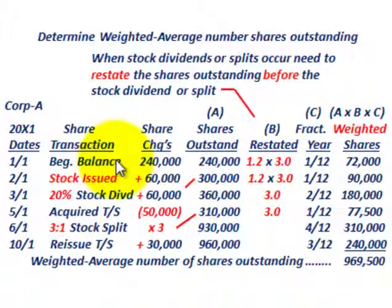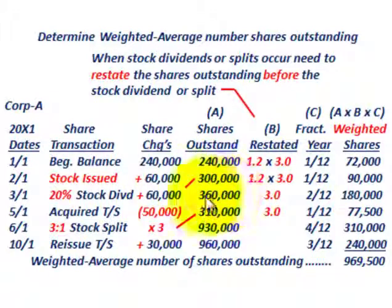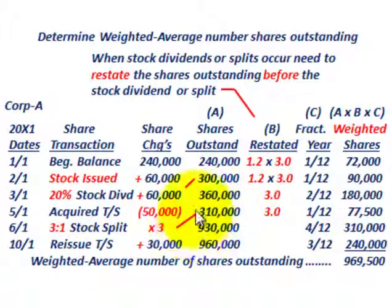Starting with a beginning balance of 240,000 shares, we issued 60,000 shares, bringing shares outstanding to 300,000. Then a 20% stock dividend adds 60,000 shares (20% of 300,000), increasing shares to 360,000. Next, 50,000 shares were acquired as treasury stock, reducing to 310,000. Then a 3-for-1 stock split triples shares to 930,000.